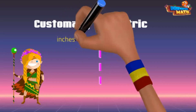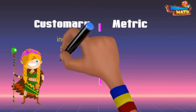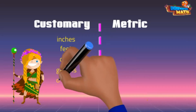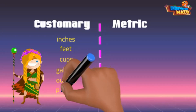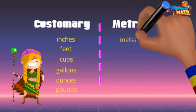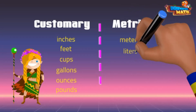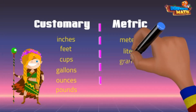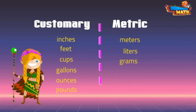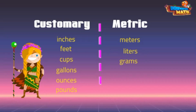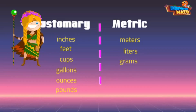Customary units include inches, feet, cups, gallons, ounces, and pounds. Metric units include meters, liters, and grams. You won't be converting any of these units — instead, you'll be solving word problems. As always with word problems, remember to look for keywords in the problem to help you figure out what they're asking you to solve for. Let's get started.